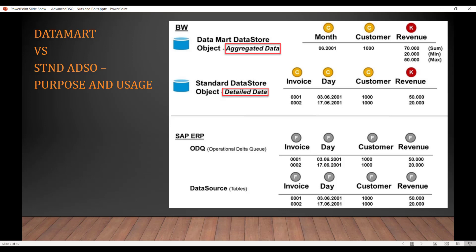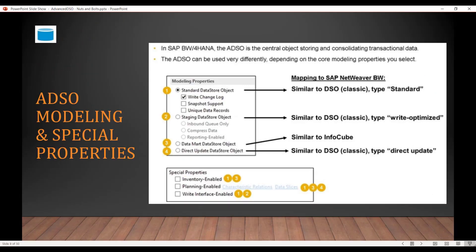You can see that we can have invoice and day level for every customer with the revenues. Then when we move the data to the DataMart ADSO, we aggregate the data, so the invoice level and day level is gone. We have at a monthly granularity what is the customer and how much is the revenue. So this is the difference between DataMart and Standard ADSO.